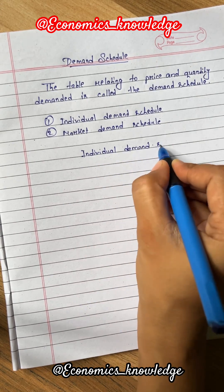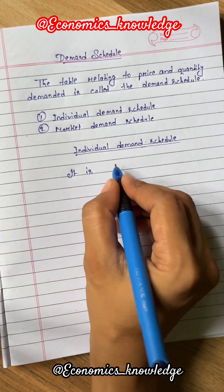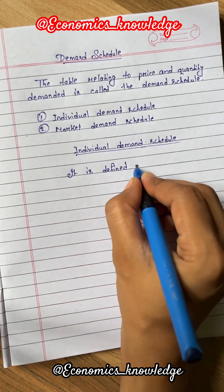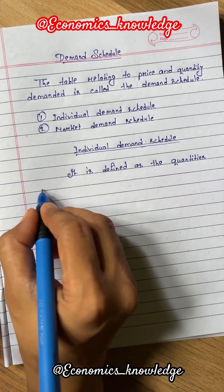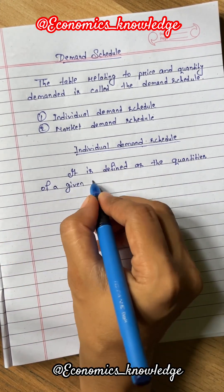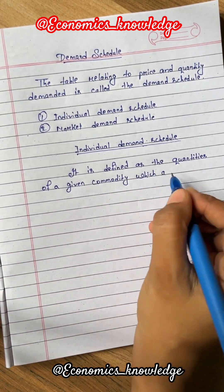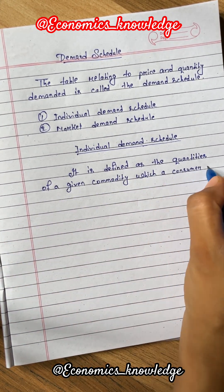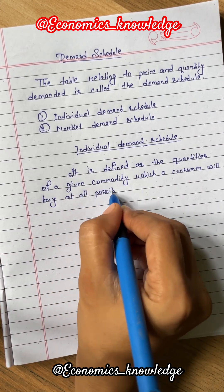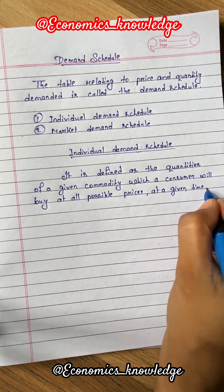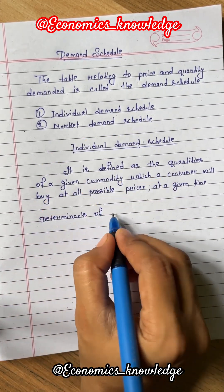Let's see first what is individual demand schedule. It is defined as the quantities of a given commodity which a consumer will buy at all possible prices at a given time. That means here we are talking about one particular buyer or consumer in the market who is ready to buy different quantities of a commodity at different possible prices.